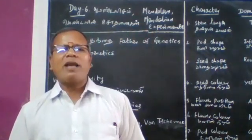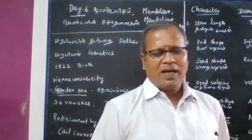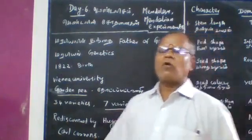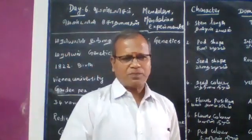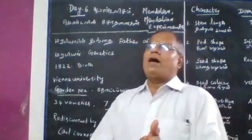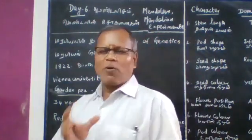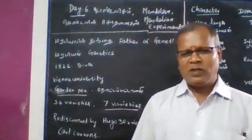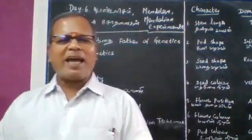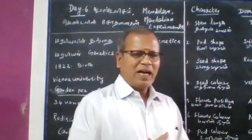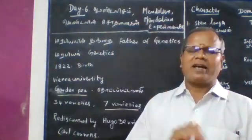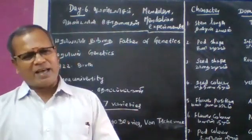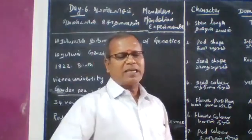Gregor Johann Mendel was born in 1822 in Czechoslovakia. He was a school teacher. He selected a garden pea plant for his experiments.